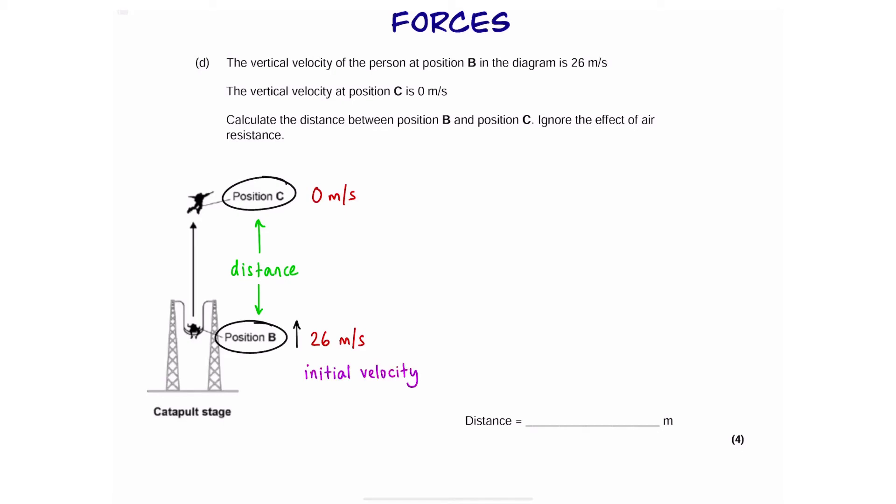So, if you take 26 as our initial velocity and 0 as the final velocity, which we can call U and V, respectively, and if you want to work out distance in meters, we could use this equation: V squared minus U squared is equal to 2 times acceleration times distance. So, 0 squared take away 26 squared equals 2 times acceleration times distance.